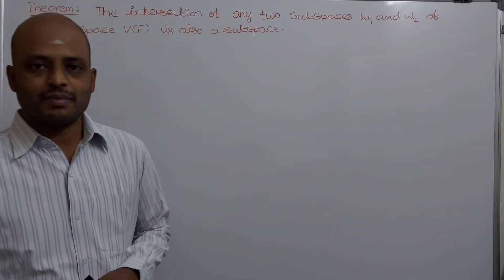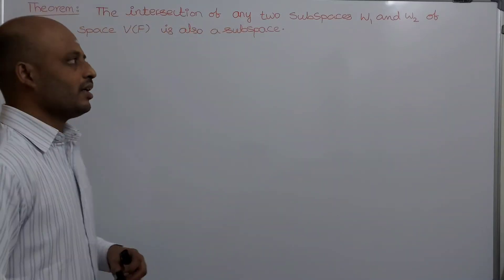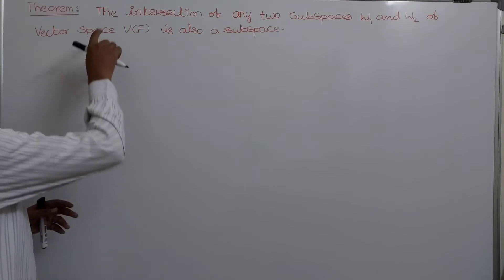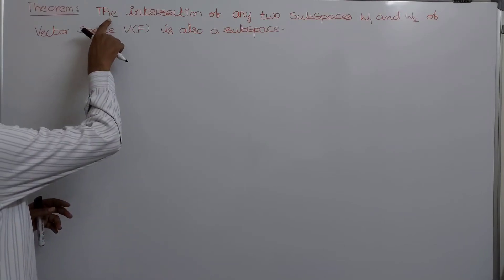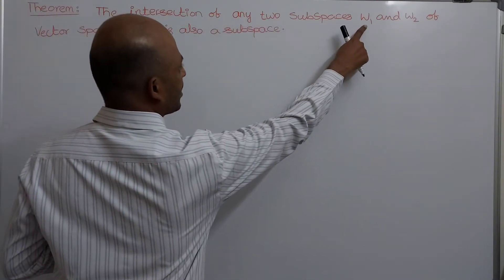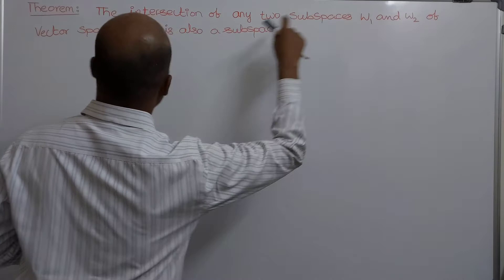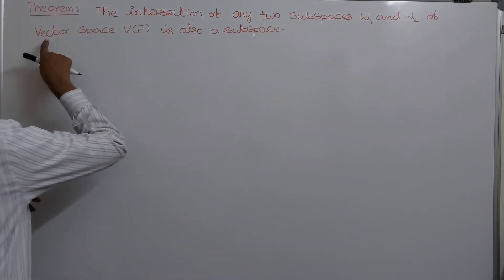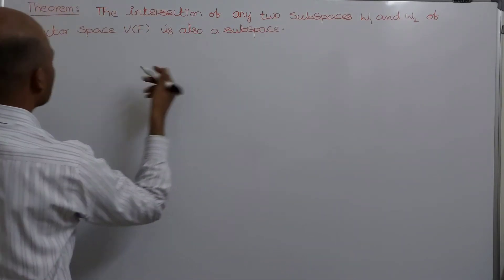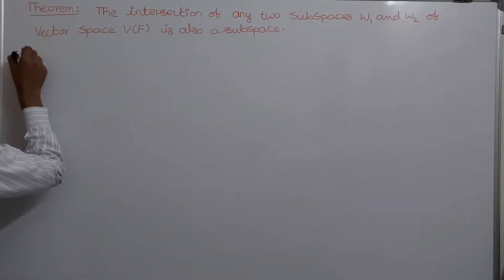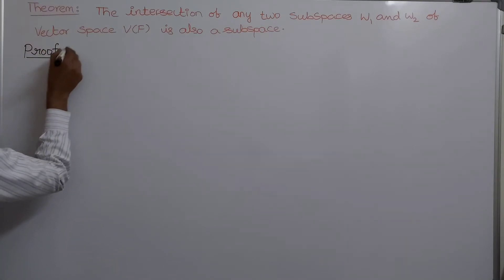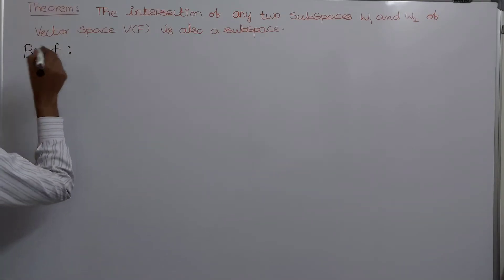Linear Algebra class number 9. In this video we discuss a theorem. Let us see the statement: the intersection of any two subspaces w1 and w2 of the vector space v of f is also a subspace. Intersection of any two subspaces is again a subspace.